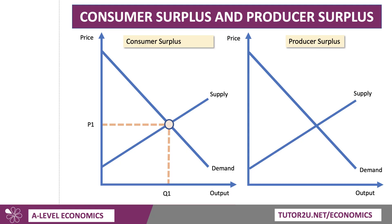We'll take a look at consumer surplus in the left-hand diagram and producer surplus in the right-hand diagram for a particular market. Consumer surplus is the difference between what consumers are willing and able to pay for a product, be it a smartphone or a meal out, for example, and the price they actually do pay. So this is a competitive market and the equilibrium is at point B, where supply and demand are in balance. The price charged is P1, and the market quantity is Q1.